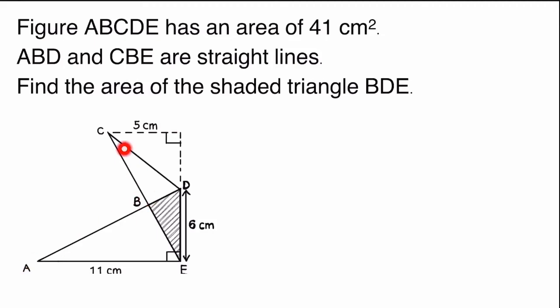Figure ABCDE, this diagram, has an area of 41 square centimeters. There are two straight lines, which are ABD and CBE. Find the area of the shaded triangle BDE — this portion that's overlapping the two triangles.